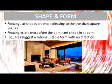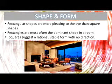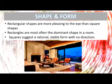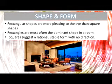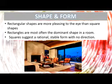Squares and rectangles are the most commonly used shapes. The straight lines and right angles of these two shapes give a sense of reliability and security. People strongly associate squares and rectangles with buildings, which is why they bring feelings of trust and authority. Common meanings conveyed include discipline, strength, courage, security, and reliability. Rectangular shapes are more pleasing to the eye than square shapes and are most often the dominant shape in a room. Squares suggest a rational, stable form with no direction.